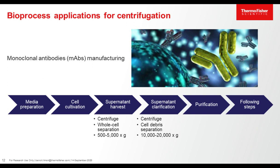For monoclonal antibody manufacturing, when the product of interest is intracellular, the centrifuge may play an important part to harvest at low g-force the cell biomass pellet, and then to clarify at mid g-force the supernatant containing the product of interest from the cell biomass pellet lysate.